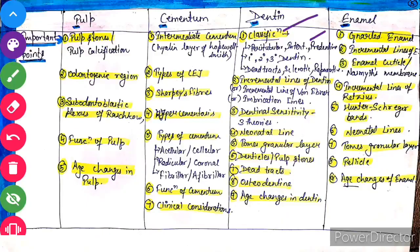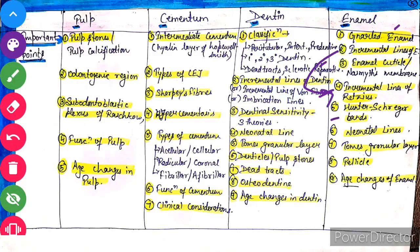Look at this table, which I showed you in the first video. Today we will discuss these important structures: first is gnarly enamel, second is incremental lines of enamel, third is enamel cuticle, fourth is incremental lines of Retzius, fifth is Hunter-Schreger bands, sixth is neonatal lines, seventh is Tomes' granular layer, eighth is pellicle, and ninth is age changes in enamel.